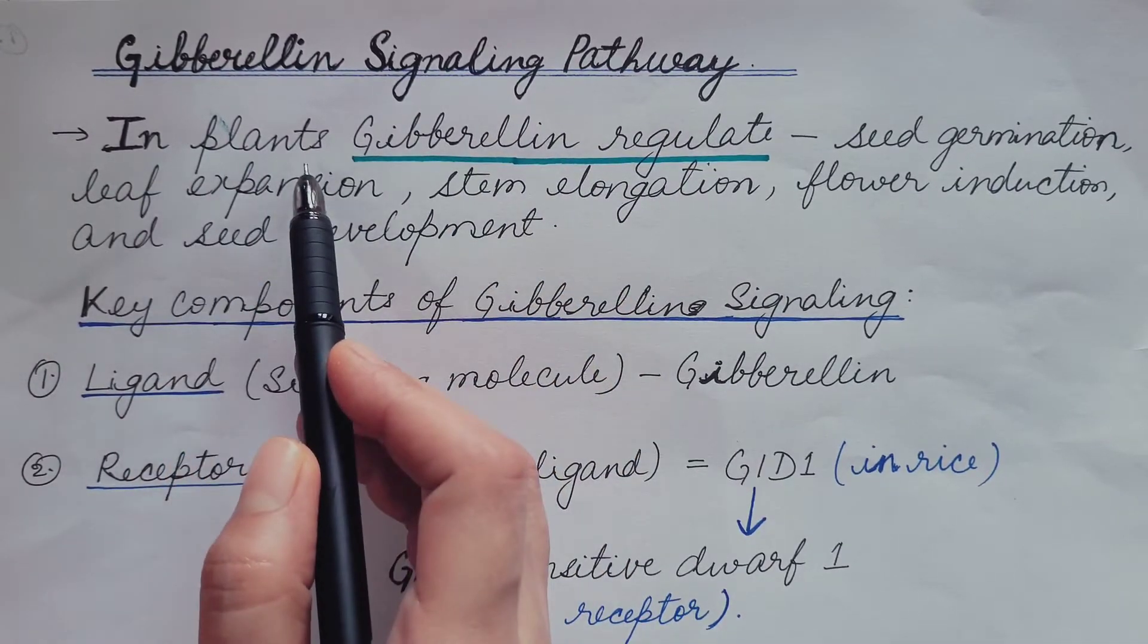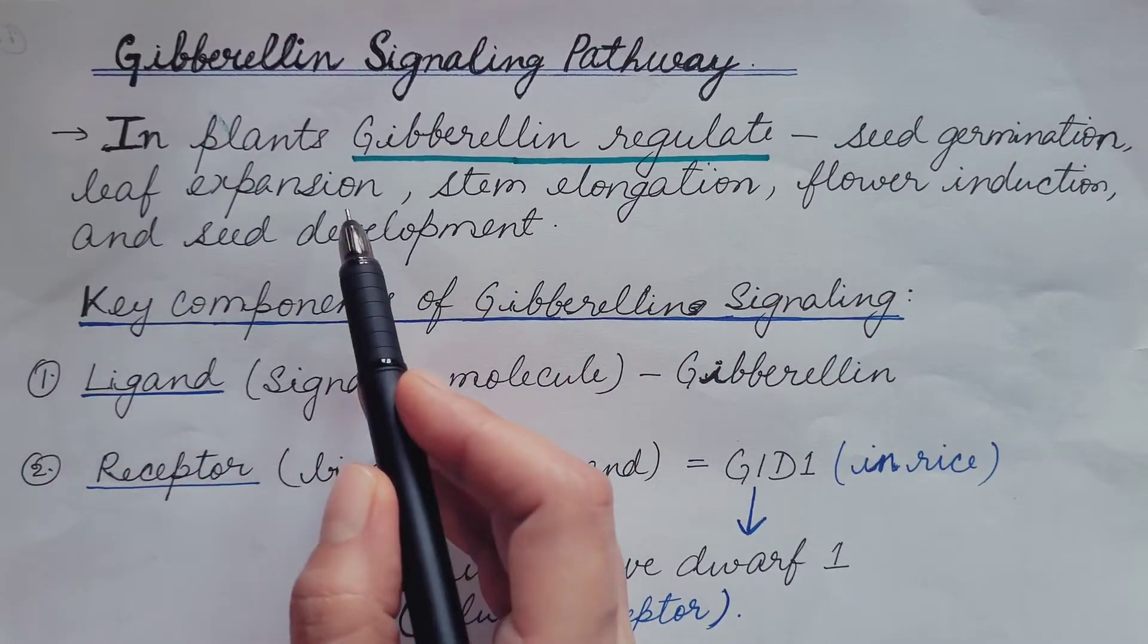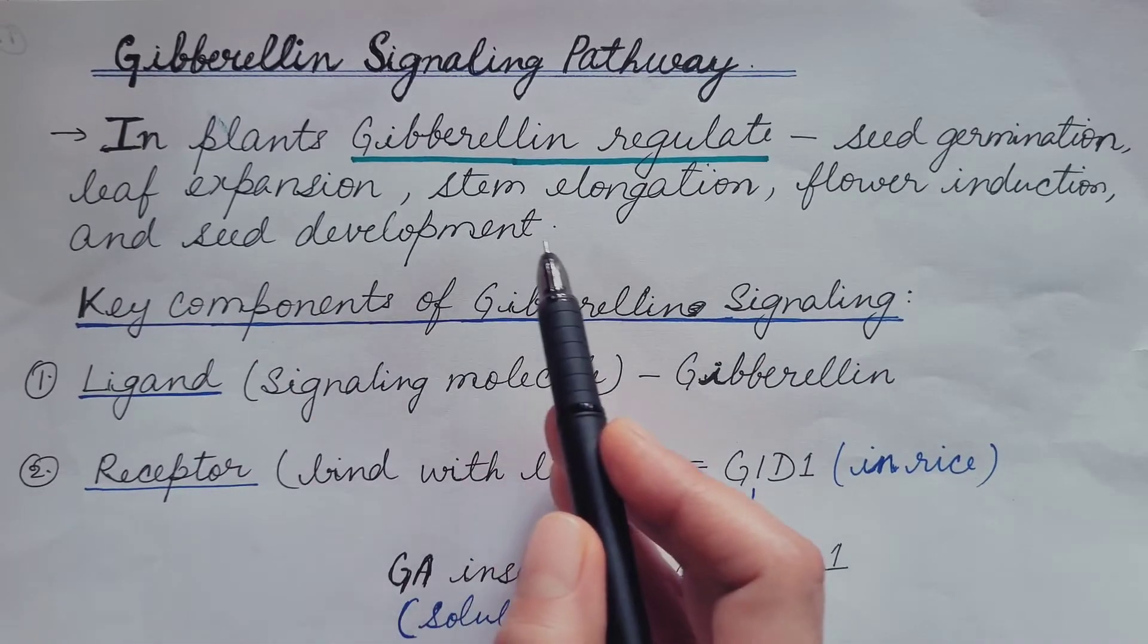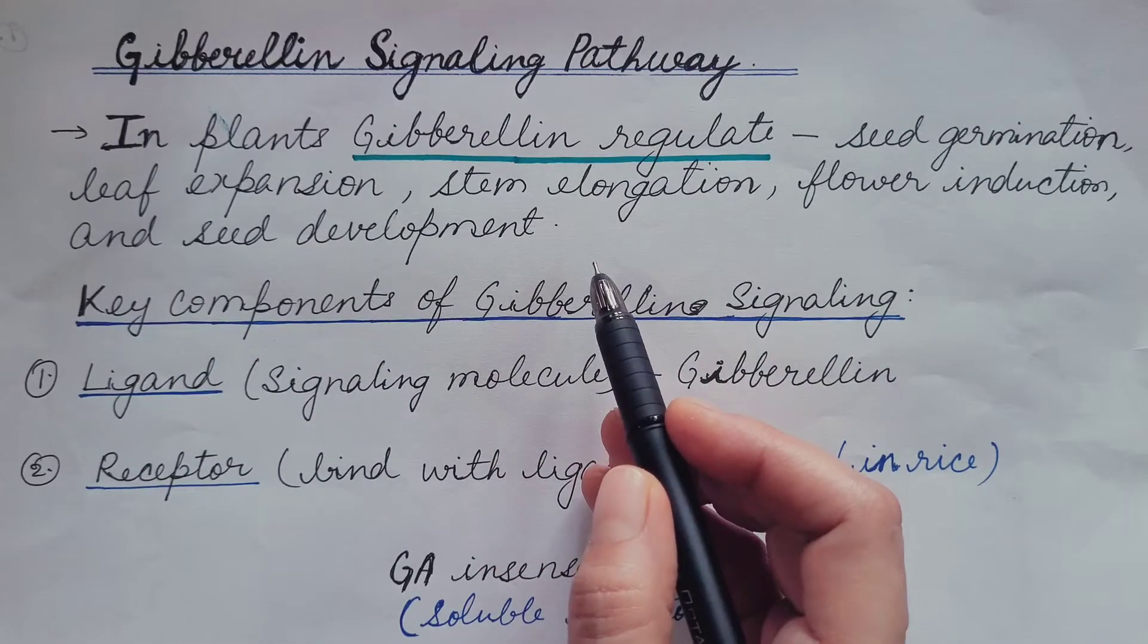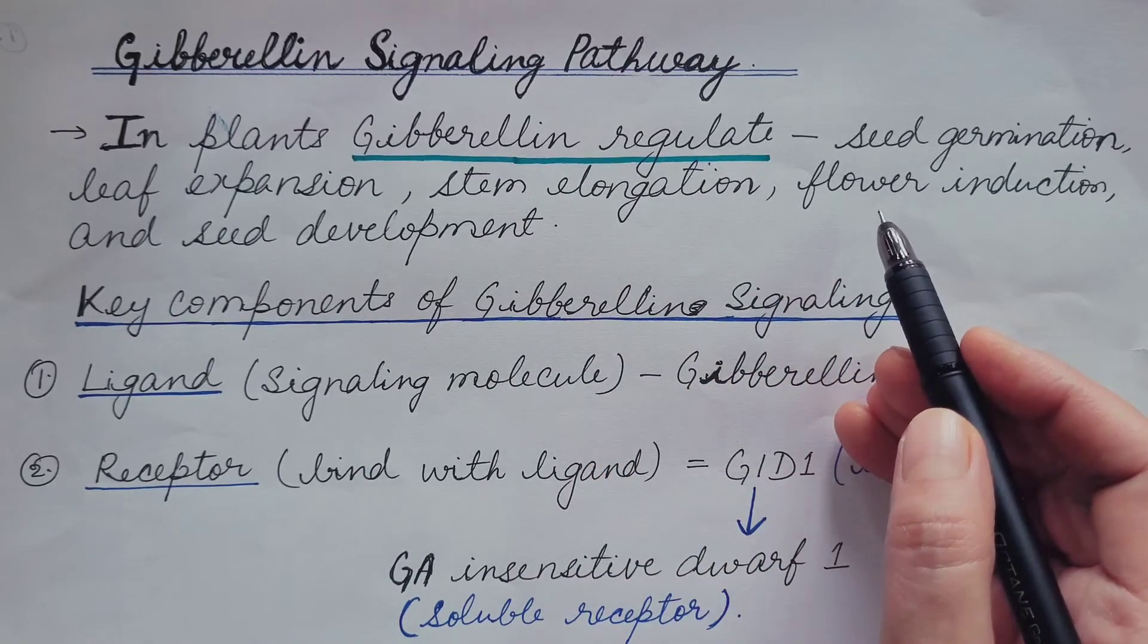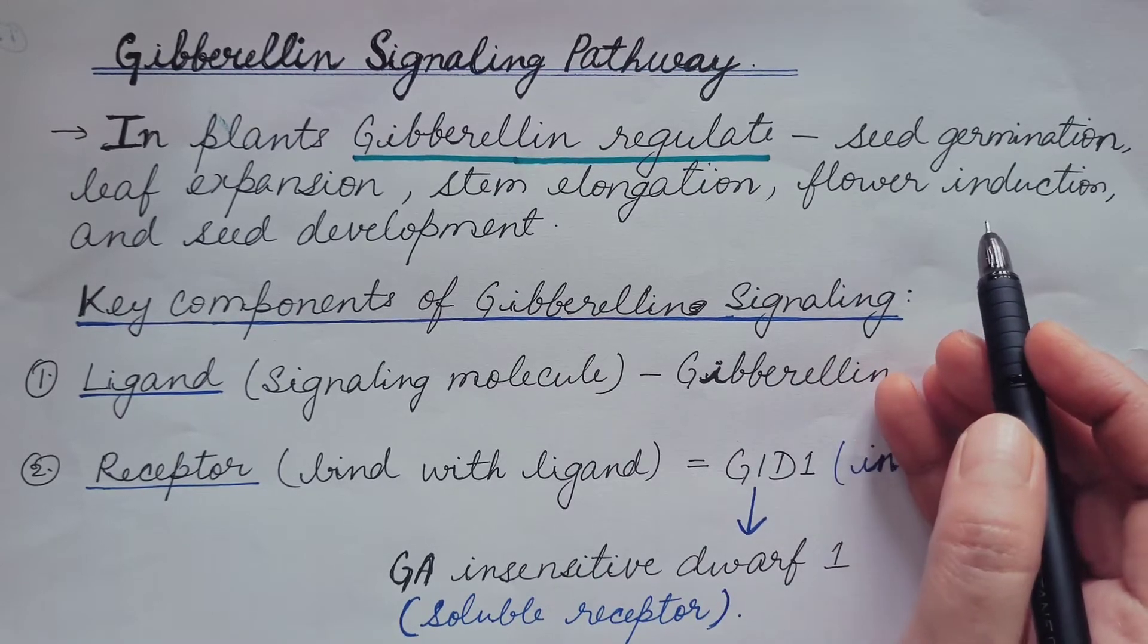We have already discussed that in plants, gibberellin regulates seed germination, leaf expansion, stem elongation, flower induction and seed development. So now the question comes, how does gibberellin regulate these physiological functions? It is brought about by gibberellin signaling pathway.